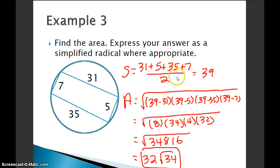So we start off and find the semi-perimeter. We add up all the sides. 31 plus 5 plus 35 plus 7. All that added up gives me 78. I divide that by 2 and I get 39.